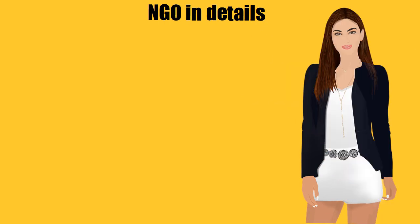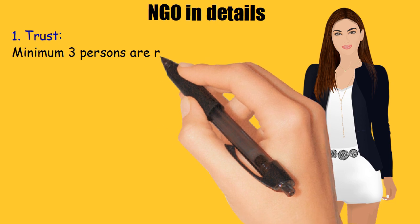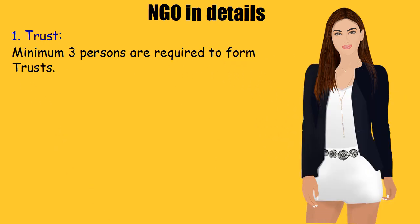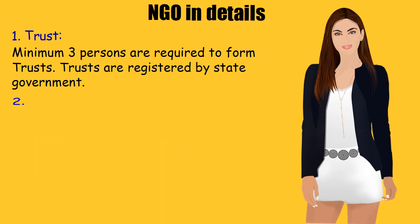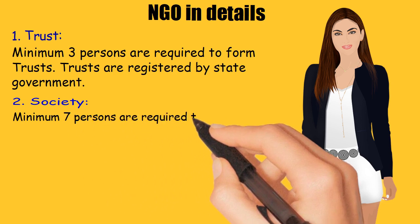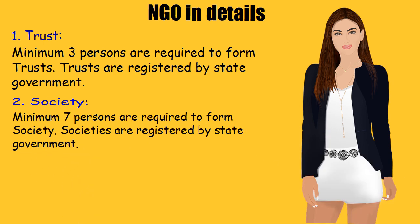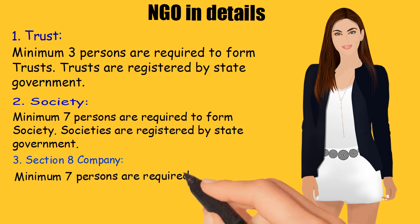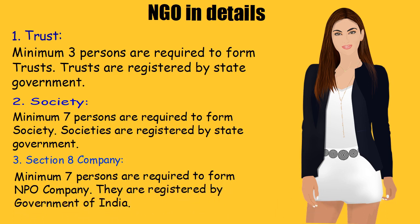NGO in detail: 1. Trusts — minimum 3 persons are required to form a trust. Trusts are registered by the state government. 2. Society — minimum 7 persons are required to form a society. Societies are registered by the state government. 3. Section 8 Company — minimum 7 persons are required to form an NPO Company. They are registered by the Government of India.